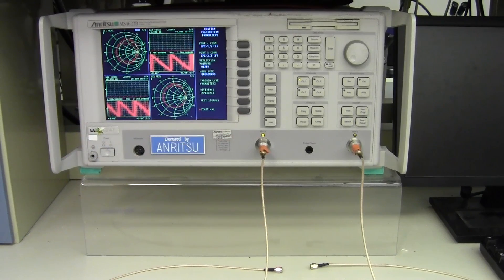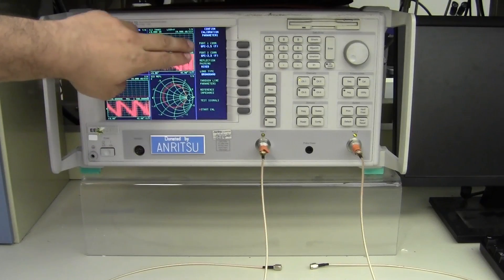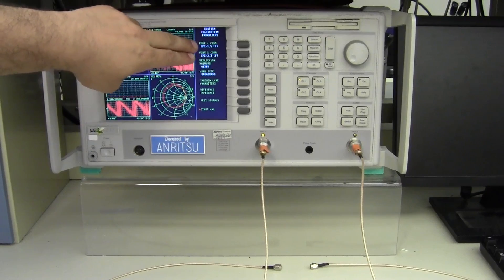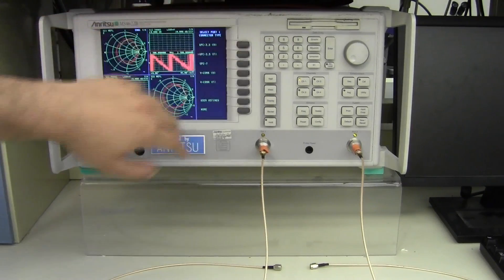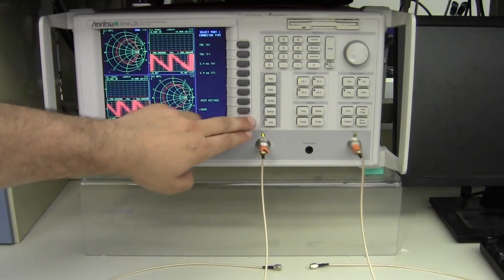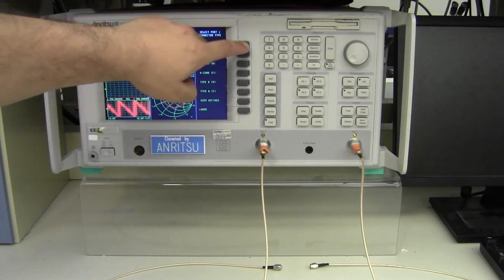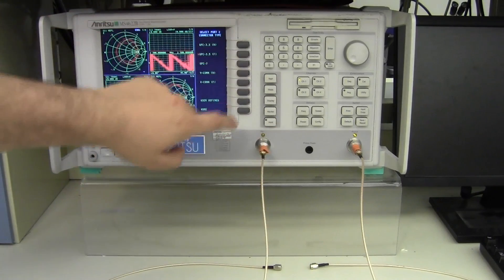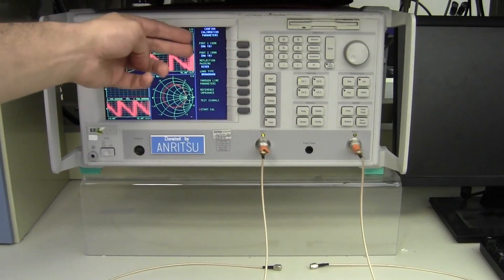Going to the next step, it asks you about what connectors you have on your feed line. These are SMA male jumpers, and so while it defaults to the GPC 3.5 female, that's incorrect and we need to go in for each port, click more three more times until you see SMA male and we select that. Do the same thing for the second port and we have our connectors set up.